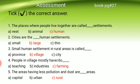Number one: the place where people live together are called blank — settlements. Here are some options: option A nest, option B animals, option C human. The right option is human — human settlements.